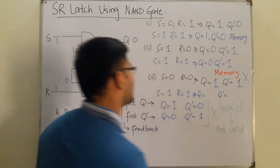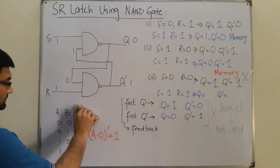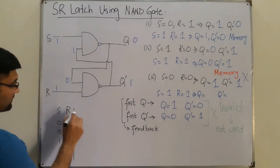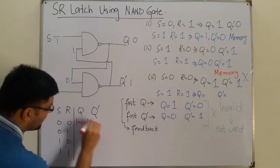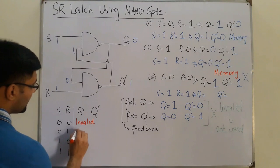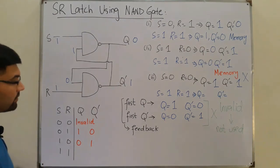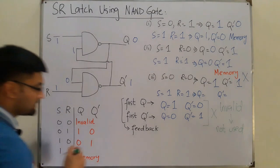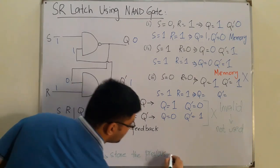Now we draw the truth table as we did for the NOR gate. With inputs S and R and outputs Q and Q complement: S=0, R=0 is the not-used invalid state; S=0, R=1 gives Q=1 and Q complement=0; S=1, R=0 gives Q=0 and Q complement=1; and S=1, R=1 retains the previous state — memory, meaning to store and retain the previous state.